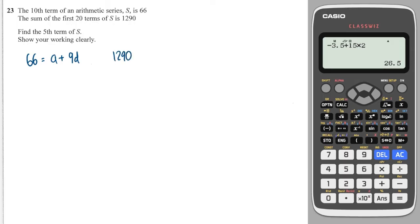So that tells me that 1290 is equal to 20 over 2, 2a plus 20 minus 1, which is 19d. So I've skipped a few steps here because this question is so similar to the question I've literally just done, but hopefully you can see how these formulas have been created. Now 20 over 2 is 10. I can divide both of these by 10. So I write 129 is equal to 2a plus 19d.